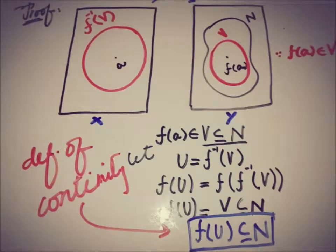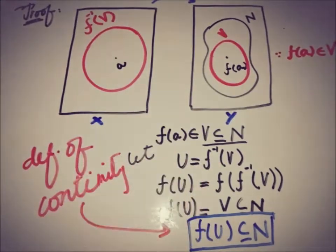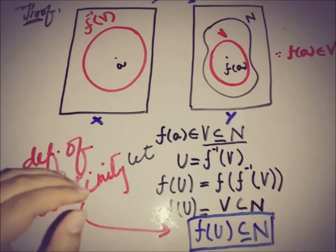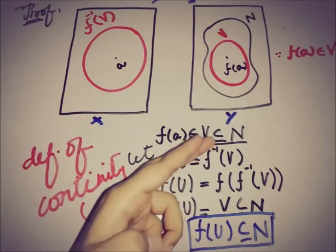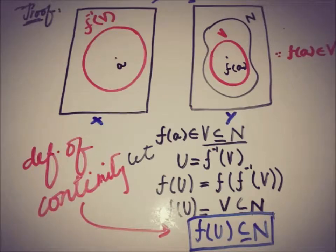Thus we have proved that if the inverse image of open set is open then the function is continuous from X to Y. Combining both of the results from the previous video and this video, what in general we have proved is that a function is continuous from X to Y if and only if the inverse image of open set is open.